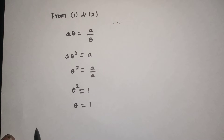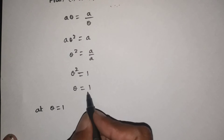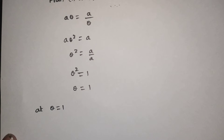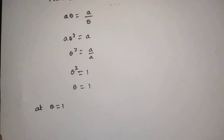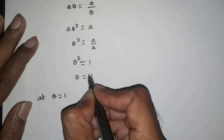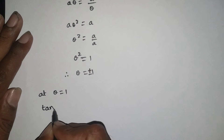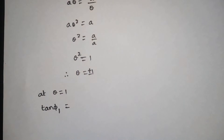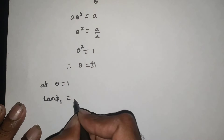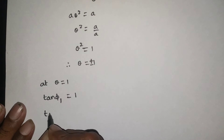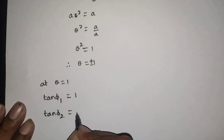At θ equal to 1, we evaluate tan φ₁ and tan φ₂. Since tan φ₁ equals θ and tan φ₂ equals minus θ, at θ equals 1 we get tan φ₁ equals 1 and tan φ₂ equals minus 1.